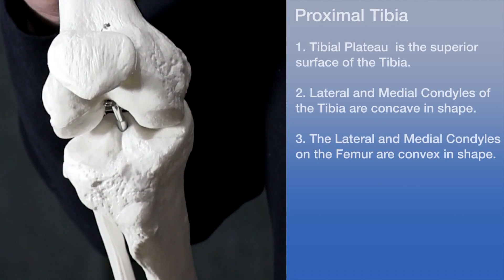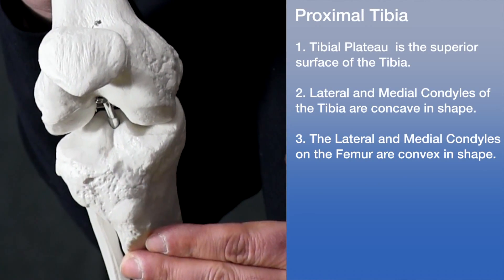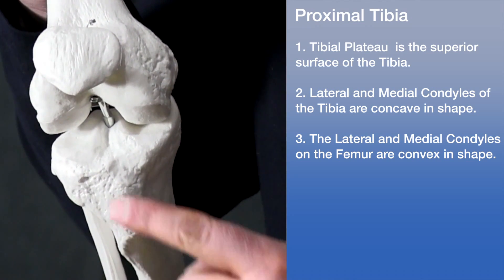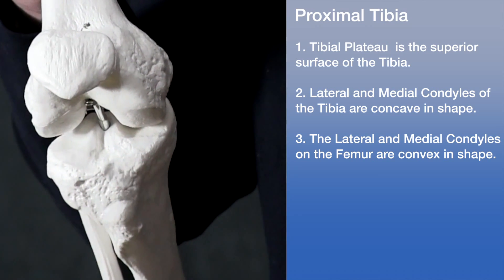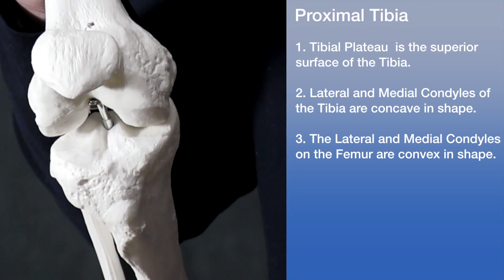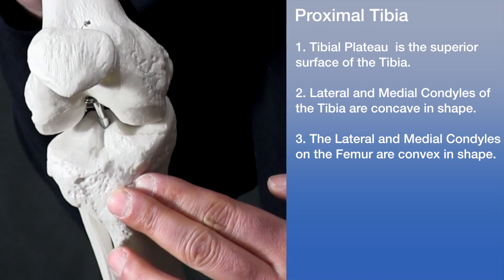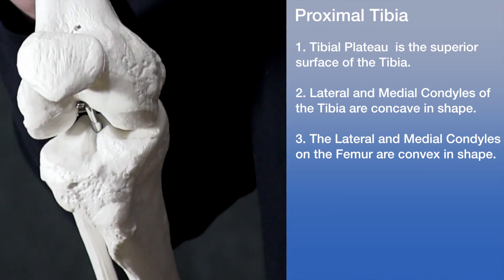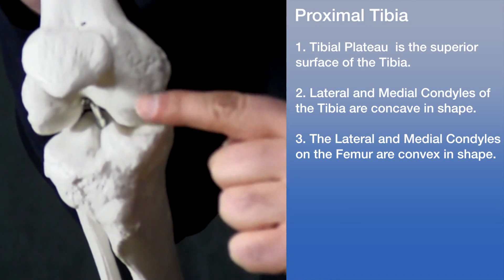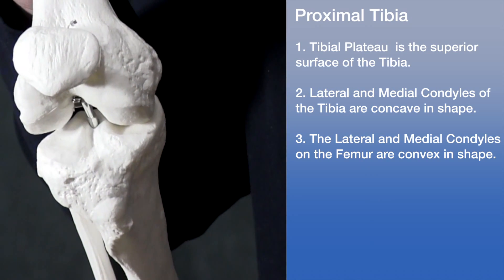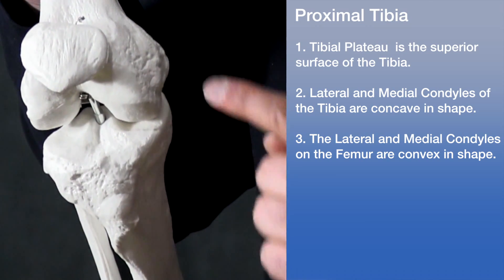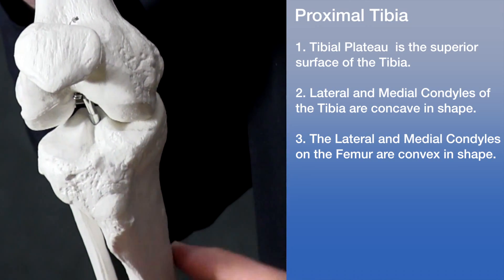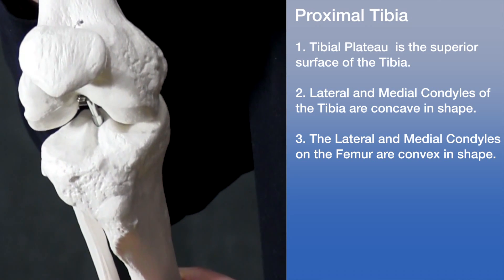Let's look at the proximal tibia. The superior surface of the tibia is called the tibial plateau. The lateral and medial condyles of the tibia are concave in shape for their articulation with the convex condyles of the femur. Note how the convex condyles of the distal femur glide across the concave condyles of the proximal tibia.